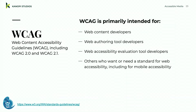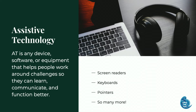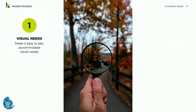Who uses these guidelines? Web content developers, page authors, site designers, tool authors, and web accessibility evaluation tool developers all follow them. It's a set of standards agreed upon by the community. Assistive technology is any device, software, or equipment that helps people work around challenges so they can learn, communicate, and function better — screen readers, speech input devices, pointers, keyboards, even a mobile phone.